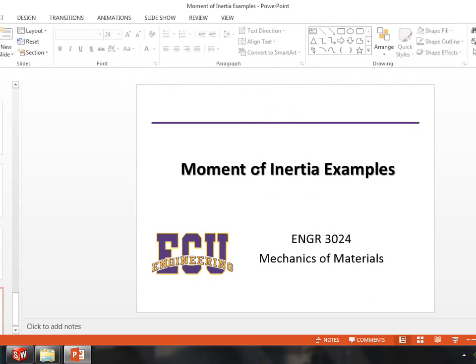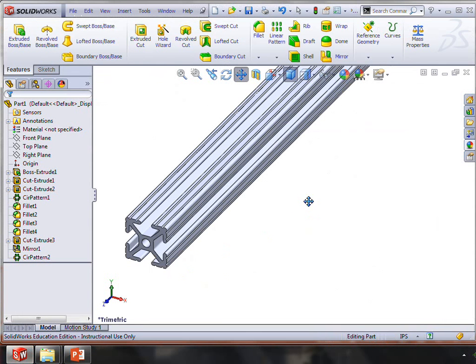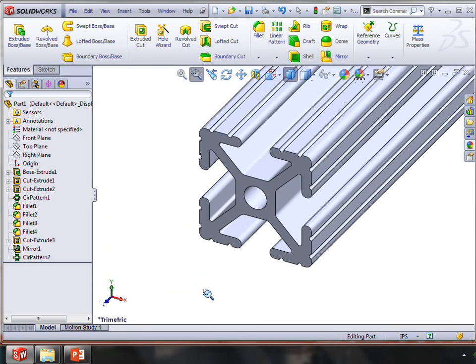One other thing I might point out is that if you have a real complicated shape, for example, this type of aluminum extrusion used a lot in quick construction, then rather than doing this by hand, you can use the tools that you have available.